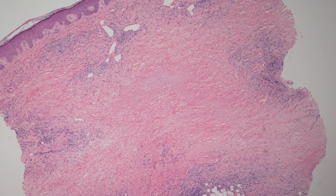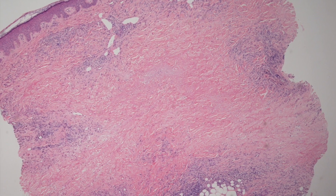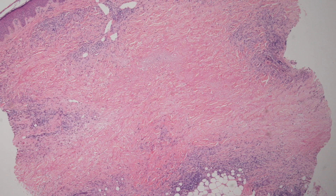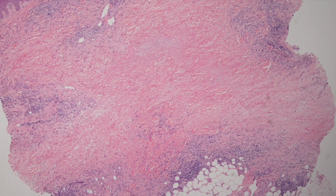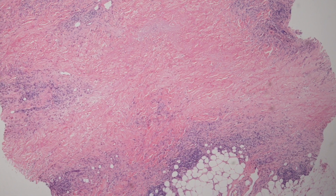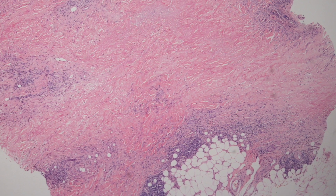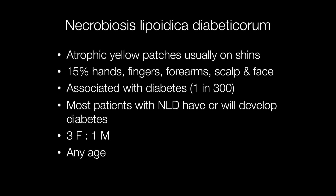This is the low-power histology of NLD, or Necrobiosis Lipoidica Diabeticorum. Classically, NLD presents with atrophic yellow patches usually on the shins, although in around 15% of cases areas affected can include the hands, fingers, forearms, scalp and face.